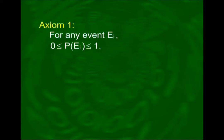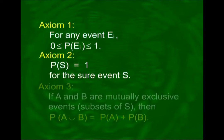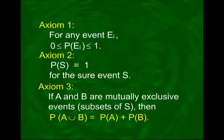Axiom 1: For any outcome eᵢ, P(eᵢ) is a number lying between 0 and 1. Axiom 2: P(S) = 1, where S represents the sure event. Axiom 3: If A and B are mutually exclusive events — in other words disjoint subsets of S — then the probability of A union B is equal to the probability of A plus the probability of B.